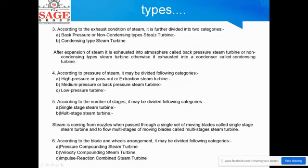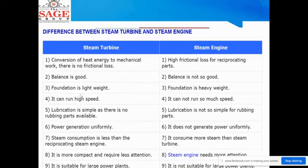According to the exhaust condition of steam, turbines are divided into two categories: back pressure (non-condensing) steam turbine and condensing type steam turbine. After expansion, if steam is exhausted into the atmosphere, it is called a back pressure steam turbine. According to pressure, turbines may be divided into high pressure, pass-out, medium pressure, and low pressure categories. According to the number of stages, they are divided into single stage and multi-stage. When steam from a nozzle passes through a single set of moving blades, it is called a single stage steam turbine. According to blade and wheel arrangement, they are divided into pressure compounding, velocity compounding, and impulse compounding.